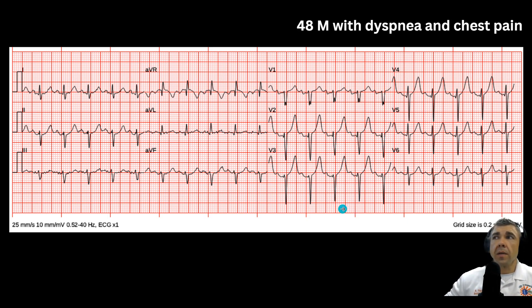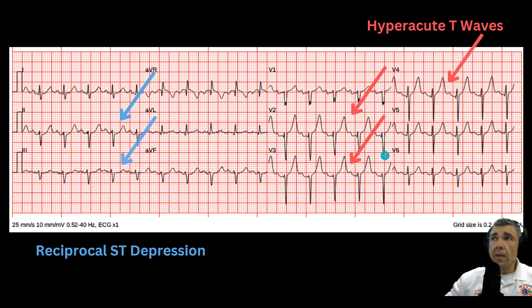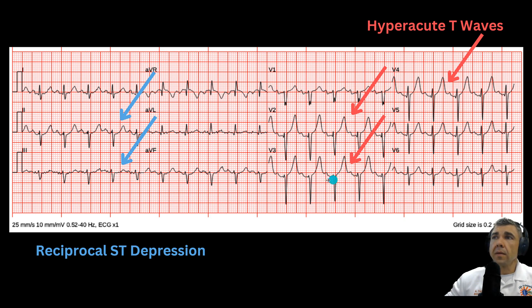It would be fine not to call this STEMI alert. However, this is an early anterior wall MI, and it's because of these T-waves — these are hyperacute T-waves. Early in an MI, when you're having ischemic tissue, you'll get these tall, symmetrical T-waves that you see in V2, V3, V4, even a little bit in V5. Symmetrical just means that they're mirrored left and right — almost a perfect isosceles triangle if you were to draw a line across the bottom.